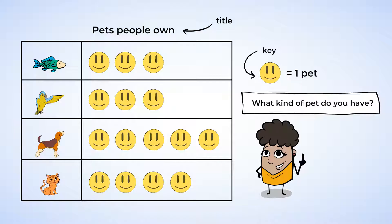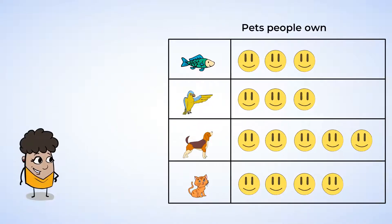Great! Let's answer some questions about this data. Which is the most common pet? Well, this question is asking which pet is owned by the most number of people surveyed. You can see that the dog has the most number of happy faces, so the dog is the most common pet.